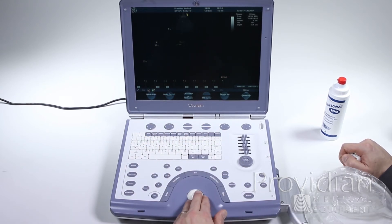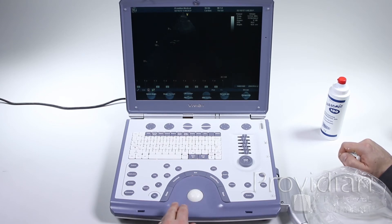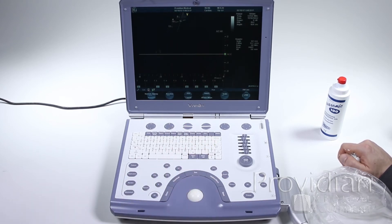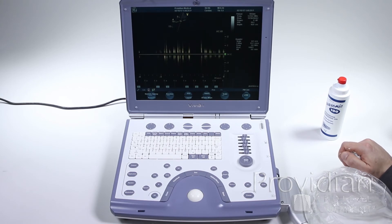Then you can use this trackball and scroll right over the area that you're looking to scan, and then you're going to press PW Doppler, and you're in PW Doppler mode.